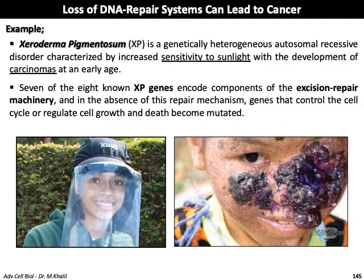Loss of the DNA repair system can lead to cancer. Xeroderma pigmentosum is a genetically heterogeneous autosomal recessive disorder characterized by increased sensitivity to sunlight and development of carcinomas at an early age, because seven of the eight known XP genes are components of the nucleotide excision repair machinery. In the absence of this repair mechanism, genes controlling the cell cycle or regulating cell growth become mutated, causing uncontrolled cell division leading to cancer.